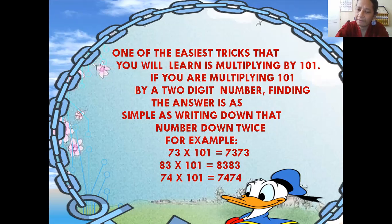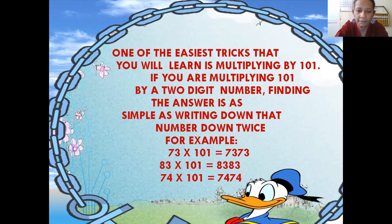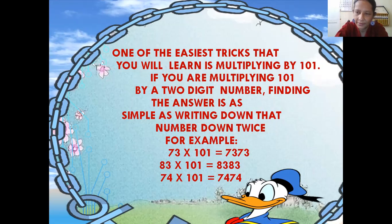Question number one: 73 — write down 73, again write down 73. Next example: 83 — write down 83, again write down 83. Next example: 74 — write down 74, again write down 74. Next example: 99 — write down 99, again write down 99. So this is simply your answer.